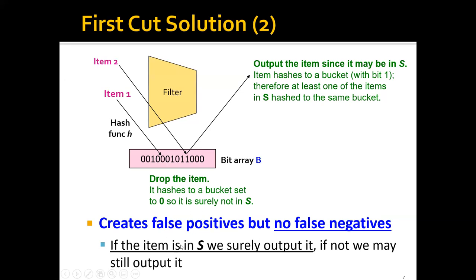On the other hand, if the item is not in S, even so, we can still hash this item to a bit 1, right? Because the hash function is kind of random with regard to the item. Therefore, we can still have some false positives.